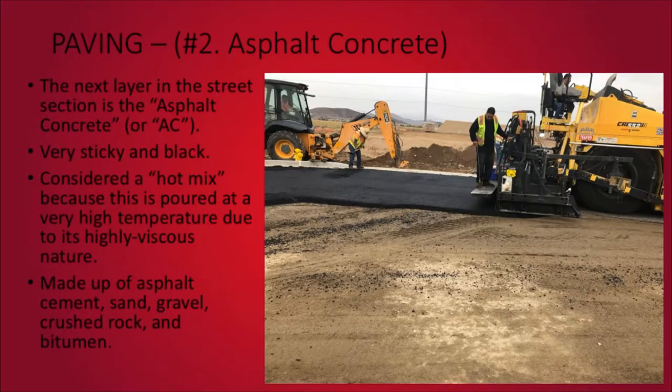The next layer in the paving section is asphalt concrete, typically the layer everybody sees in the street — also referred to as AC. When it's poured it's very sticky and black, and it's considered a hot mix because it's poured at a very high temperature due to its highly viscous nature. It's made up of asphalt, cement, sand, gravel, crushed rock, and bitumen, which is basically residue from petroleum.